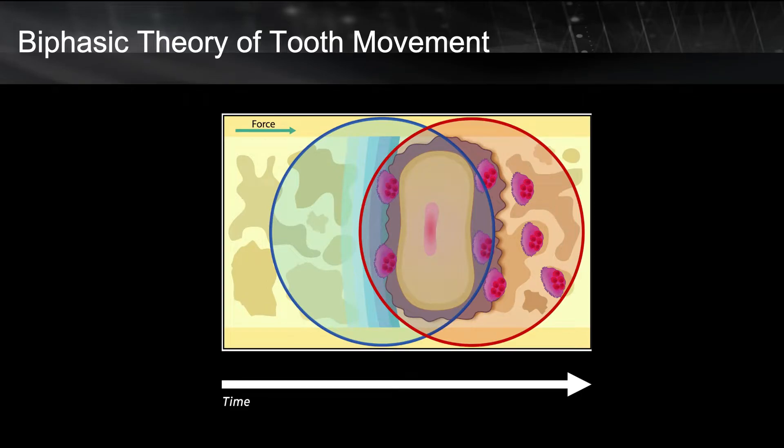If you remember from last session, we said that tooth movement occurs in two overlapping phases. One is called the catabolic phase, and one is called the anabolic phase. The cells participating in the catabolic phase are osteoclasts, and the cells participating in the anabolic phase are osteoblasts. Which one of these phases plays an important role in controlling the rate of tooth movement?